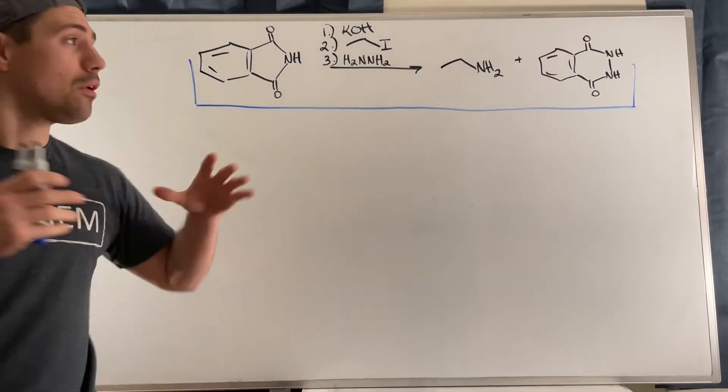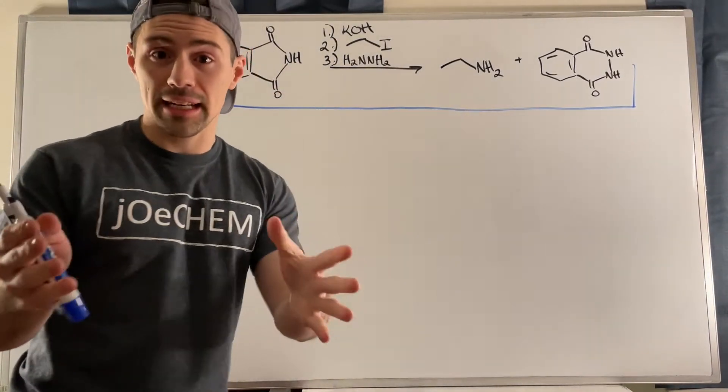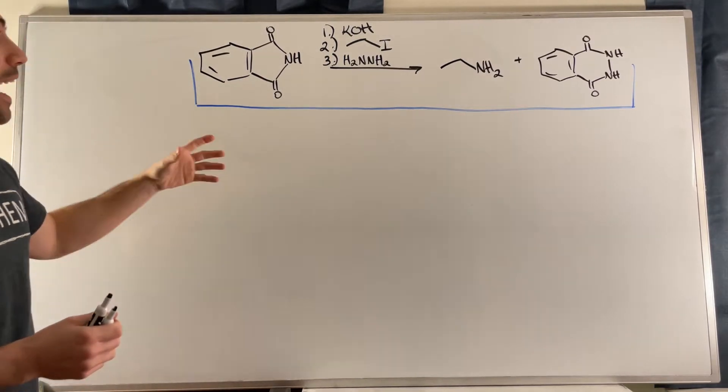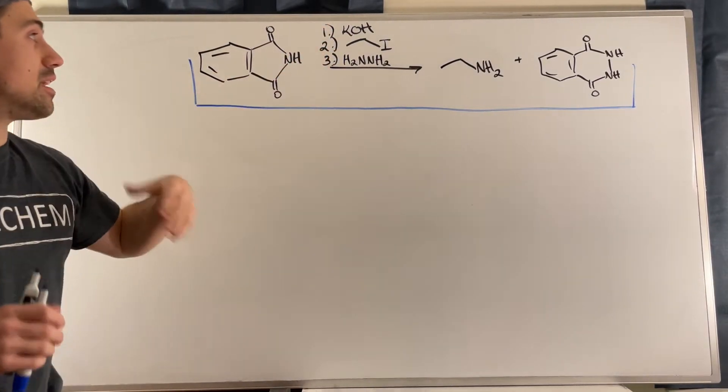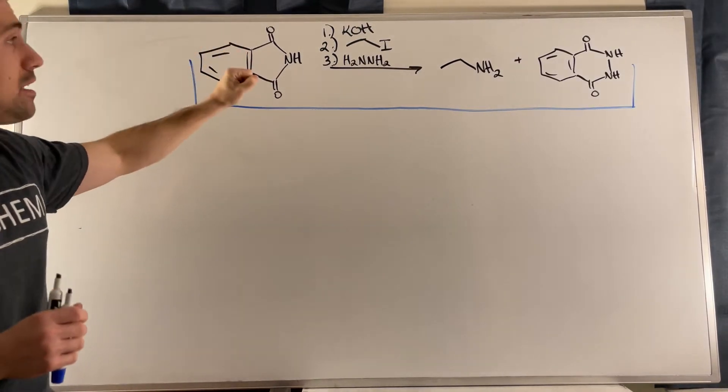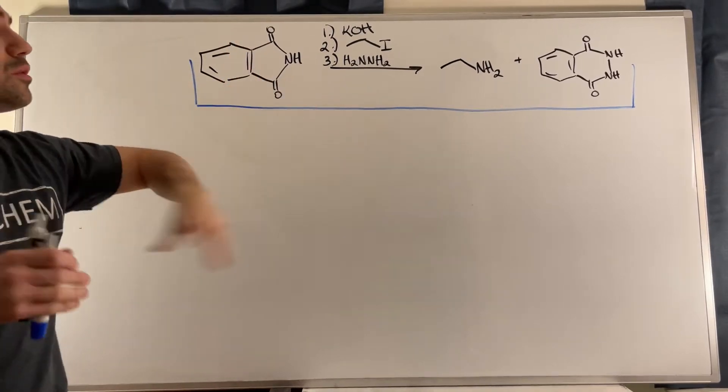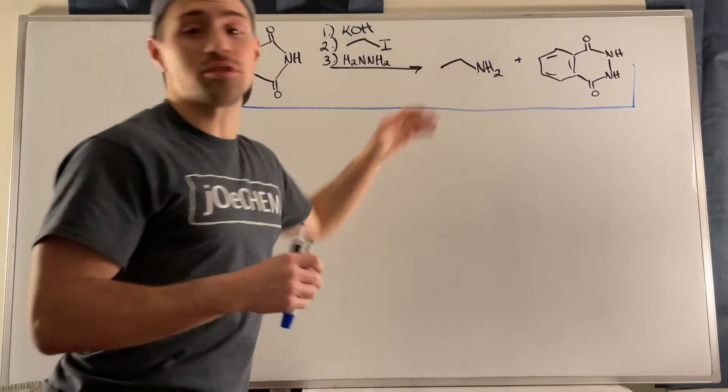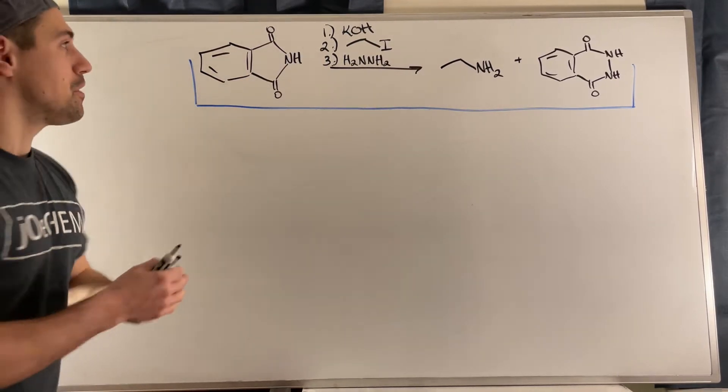Okay, gang. So I want to jump into this reaction right here, showing you how to actually perform mechanistically a Gabriel Synthesis. And what you can see is we're going to first deprotonate the nitrogen in thalamide. We're going to attack that primary carbon in ethyl iodide. And then we're going to liberate that and produce our primary amine, and then have that cyclic byproduct.